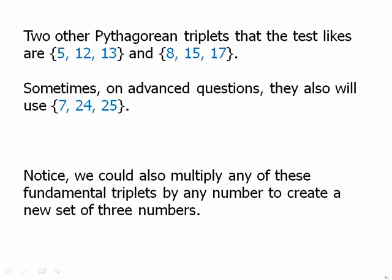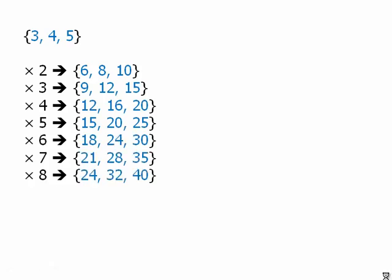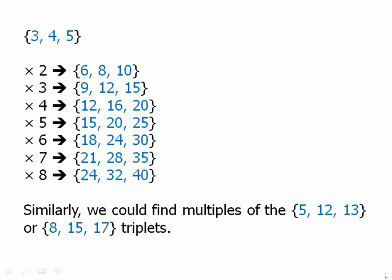Notice we could also multiply any of these fundamental triplets by any number to create a new set of three numbers. Starting with 3-4-5, we could multiply that by 2 and get 6-8-10, multiply it by 3 and get 9-12-15, and so forth. Similarly, we could multiply by multiples of 5-12-13 or 8-15-17. You really don't have to memorize all the multiples. All you have to do is memorize those four starting triplets, and then you can easily find the multiples if you need them.